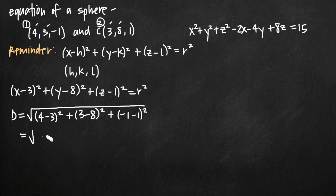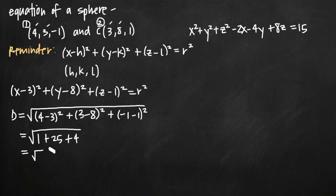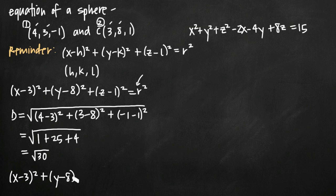Simplifying: 4 minus 3 is 1, squared is 1. 3 minus 8 is negative 5, squared is 25. Negative 1 minus 1 is negative 2, squared is 4. So we get 1 plus 25 plus 4, which is 30, meaning the distance and radius is the square root of 30. Plugging into our sphere formula, r squared equals square root of 30 squared, which is just 30. So the equation of our sphere is x minus 3 squared plus y minus 8 squared plus z minus 1 squared equals 30.